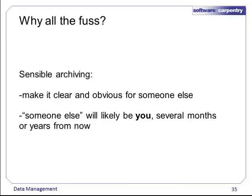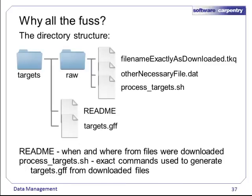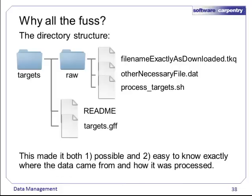These techniques all revolve around the idea of sensible archiving, because even if you're the only one working on a project, you'll forget the details of what you're working on several years later. For example, it had been a year since I worked on a project and a colleague asked me precisely how I generated a data file. Having the following directory structure helped immensely. The README listed where I downloaded the file, the filename exactly as downloaded (.tkq), when I downloaded it, and the version. And gettargets.sh listed all the commands, including wget commands to download other necessary files, that I'd entered to create targets.gff from the original .tkq file. Re-running gettargets.sh would recreate targets.gff exactly, and looking at it shows the precise parameters used. I was able to say exactly how I had generated targets.gff and to easily recreate it from the raw data files.